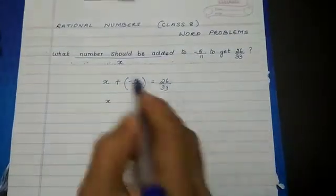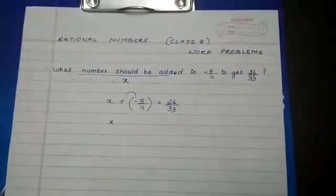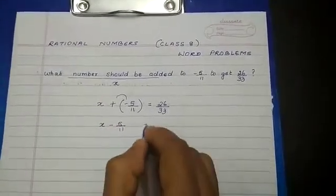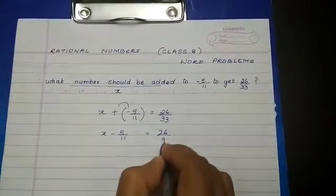x, what is plus into minus? Plus into minus is minus. So minus 5 by 11 is equal to 26 by 33.